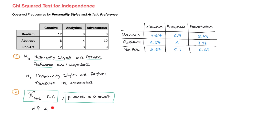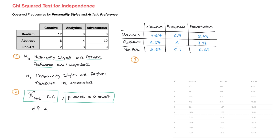The chi-squared statistic is essentially a measure of how much the observed values deviate from the expected values. If the chi-squared statistic is too big — in other words, if the observed values deviate too much from the expected values — then we'll have to reject the null hypothesis and conclude that the two variables are associated. To figure out whether the chi-squared statistic is too big, we need to compare it to the critical chi-squared value, and that brings us to step three. In exams the critical chi-squared value is often given, and if it's not, we'll be able to work with the p-value instead.